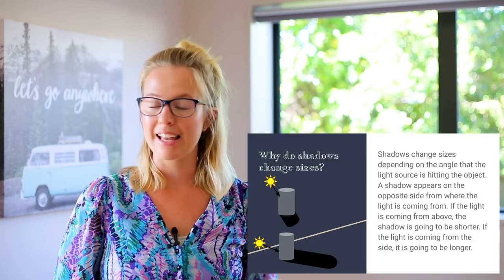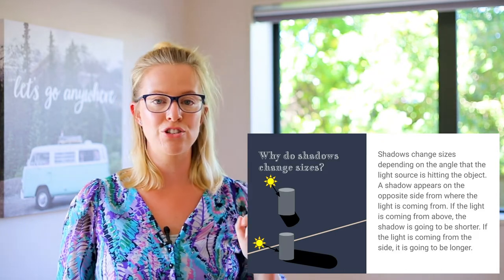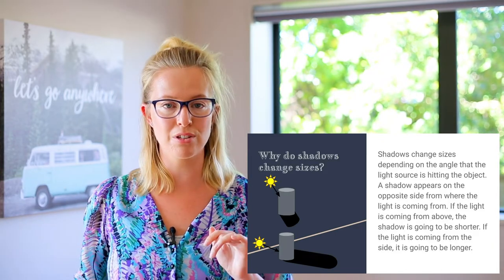That's why in summer, when the sun is higher up in the sky, our shadows are shorter. But when the sun is getting lower in the sky, our shadows stretch out longer, making our shadows look really, really tall. I love it when that happens because I'm not a very tall person, but when the sun is low in the sky, it makes my shadow really tall and long.